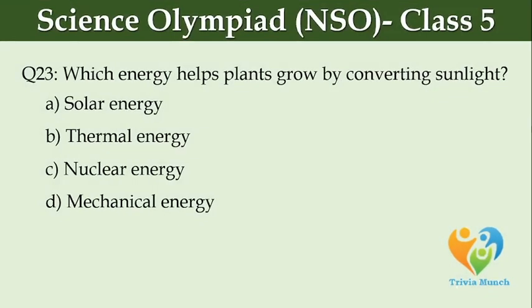Which energy helps plants grow by converting sunlight? Option A, solar energy. Option B, thermal energy. Option C, nuclear energy. Option D, mechanical energy.